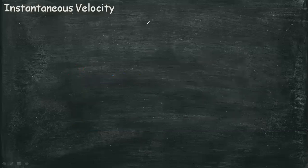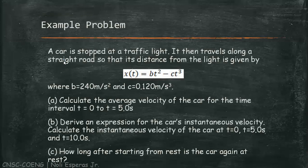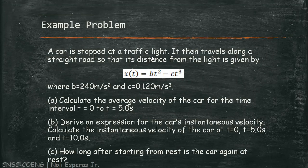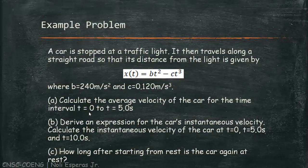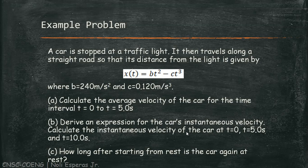So let's have an example. A car is stopped at a traffic light. It then travels along a straight road so that its distance from the light is given by x(t) = bt² − ct³, where b = 2.40 m/s² and c = 0.120 m/s³. (a) Calculate the average velocity of the car for the time interval t = 0 to t = 5.0 seconds. (b) Derive an expression for the car's instantaneous velocity and calculate the instantaneous velocity at t = 0, t = 5 s, and t = 10 s. (c) How long after starting from rest is the car again at rest?